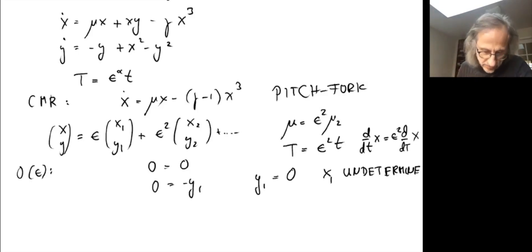So we go to order ε². The left term is actually order ε³. This is order ε³. On the left hand side we have zero, on the right hand side we have in principle x₁y₁. But since y₁ is zero, this is actually zero. So we have again nothing happening in the x equation.